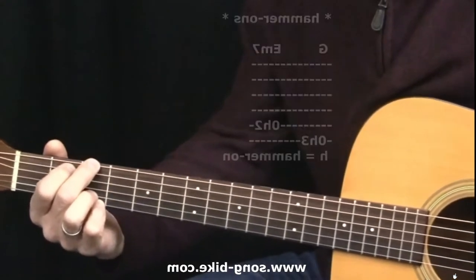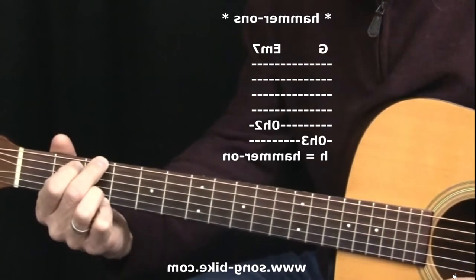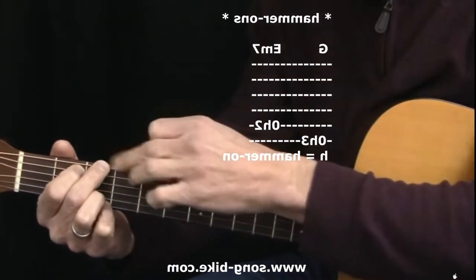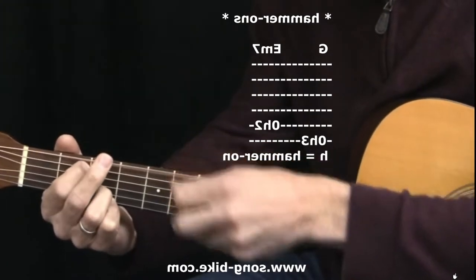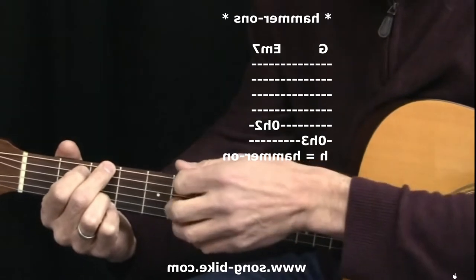Let's talk about hammer-ons. We've got the four finger G. Now watch this, I'm going to do a hammer-on the sixth string. I'm going to hit it open and then hammer down on the third fret with my middle finger.